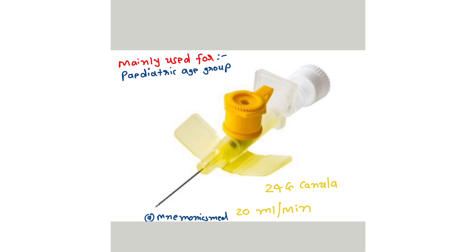This is the 24 gauge cannula — it is yellow colored and mainly used for the pediatric age group. Its flow rate is 20 ml per minute. Remember: 24 gauge cannula is yellow color.